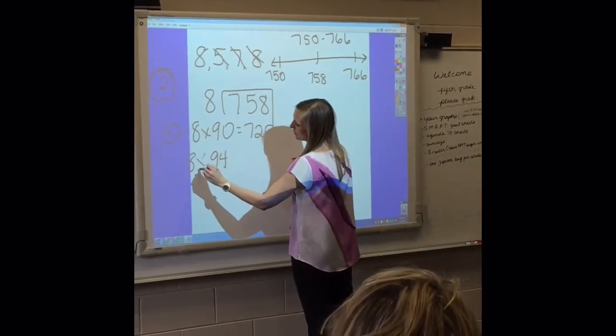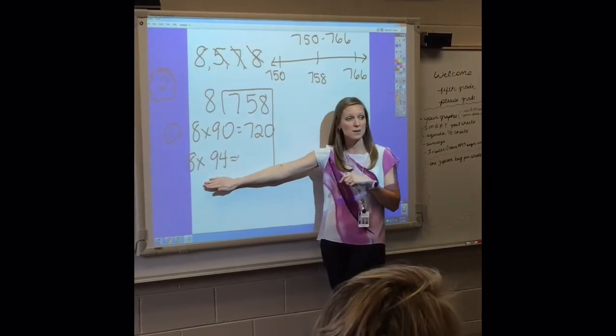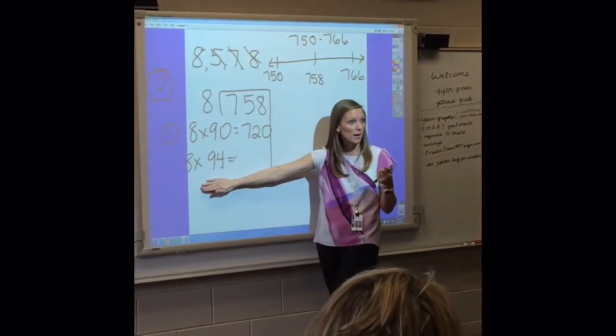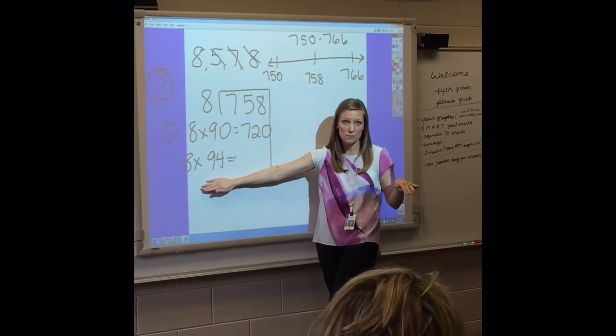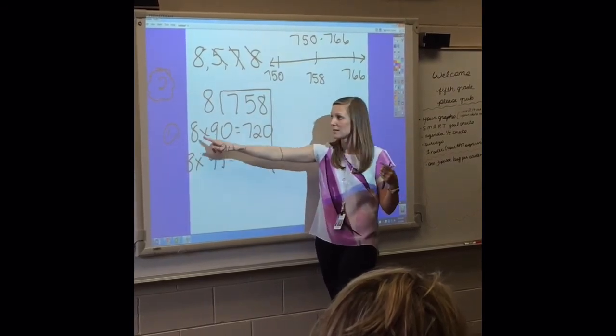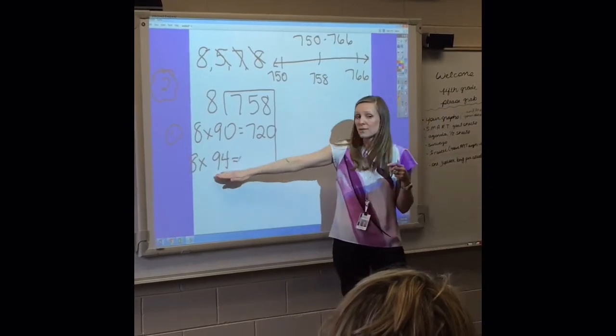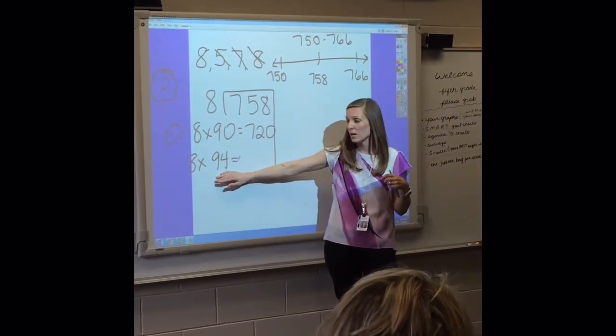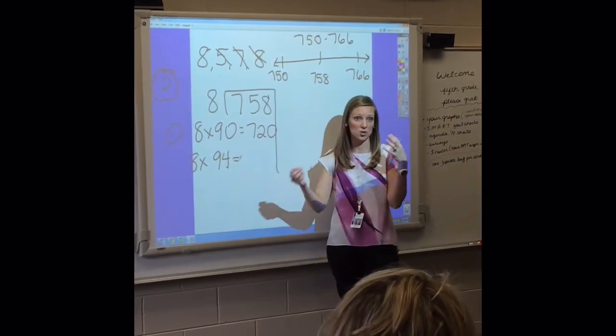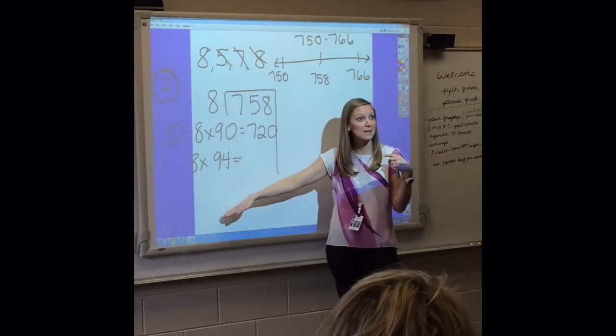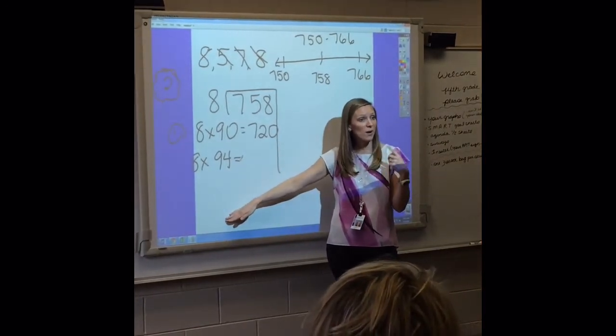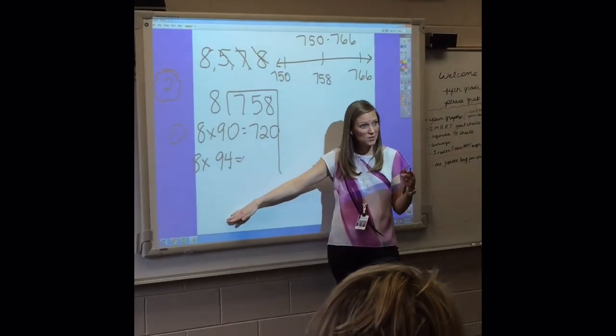So we're going to do 8 times 94. Now remember, if you can't do this in your head, you can write it on the paper. And it would be helpful to have the multiples of 8 written down since that's the divisor that we're working with for this problem. If not, we could expand the number. If I expanded or distributed 94, I'd have 90 and 4. So what's 8 times 4? 32.